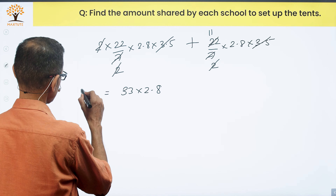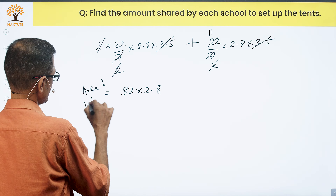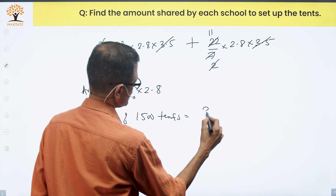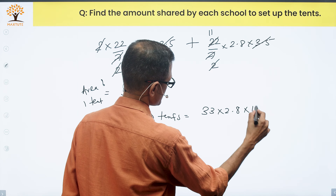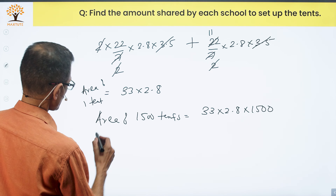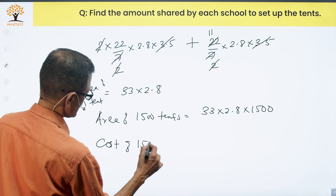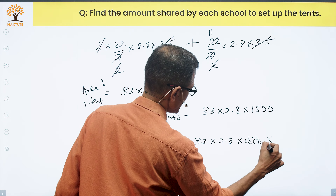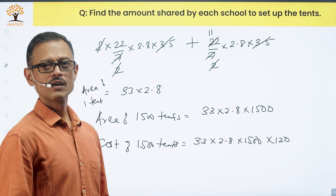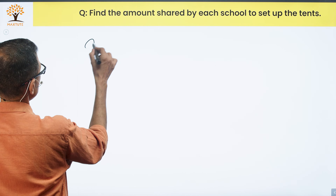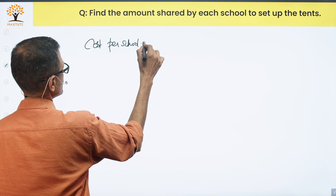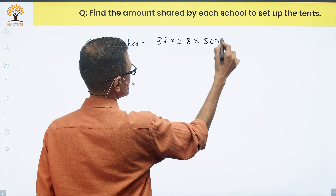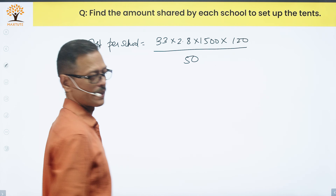Area for 1,500 tents is 33 × 2.8 × 1,500 square meters. The cost of 1,500 tents is 33 × 2.8 × 1,500 × 120 rupees per meter square. Divided by 50 schools, the cost per school equals 33 × 2.8 × 1,500 × 120 ÷ 50, which simplifies — 1,500 ÷ 50 becomes 30.